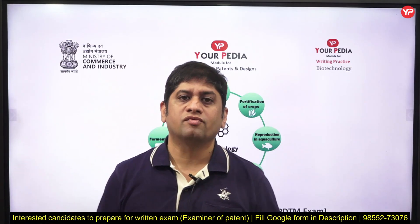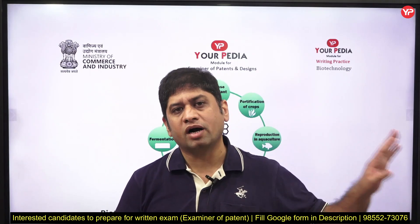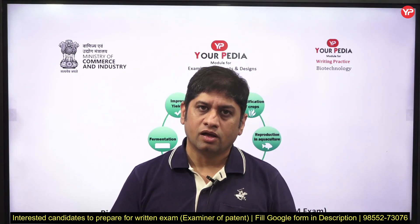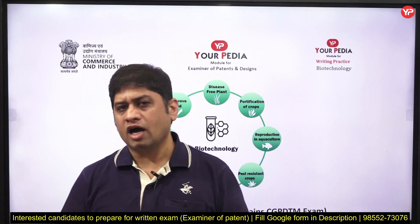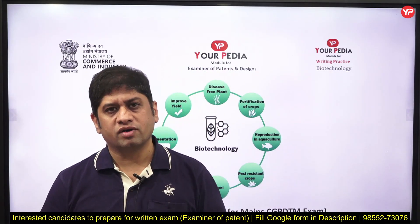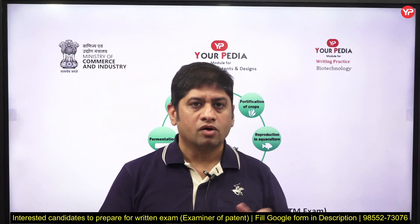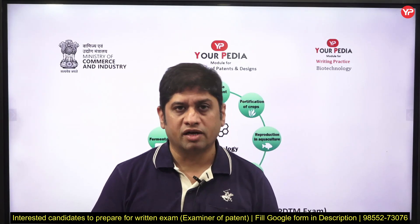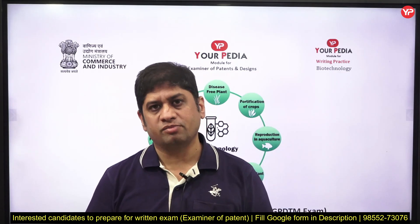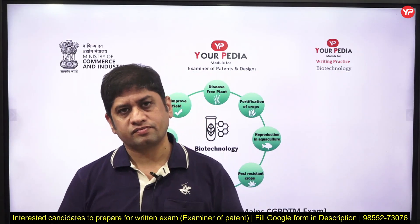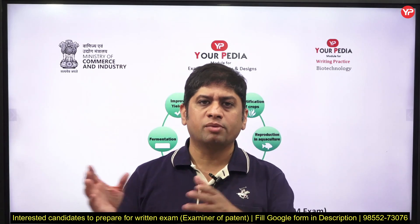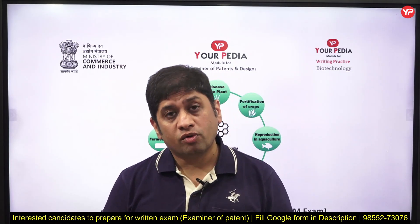Those 500 marks will count in the final selection; preliminary marks will not be counted. The syllabus for preliminary — IPR, current affairs, English, reasoning, aptitude — is almost the same as Mains Paper 1, which is an objective paper of 200 marks. So when you prepare for preliminary you are already preparing for Paper 1. The real difference will be in the subjective paper.